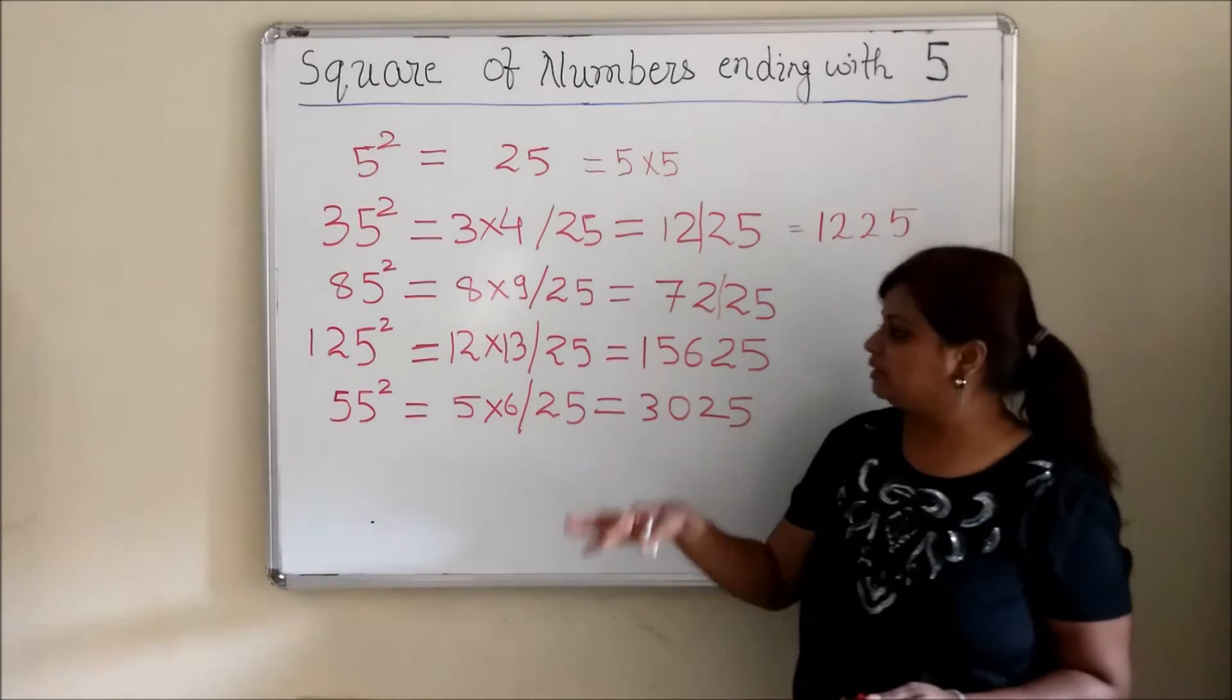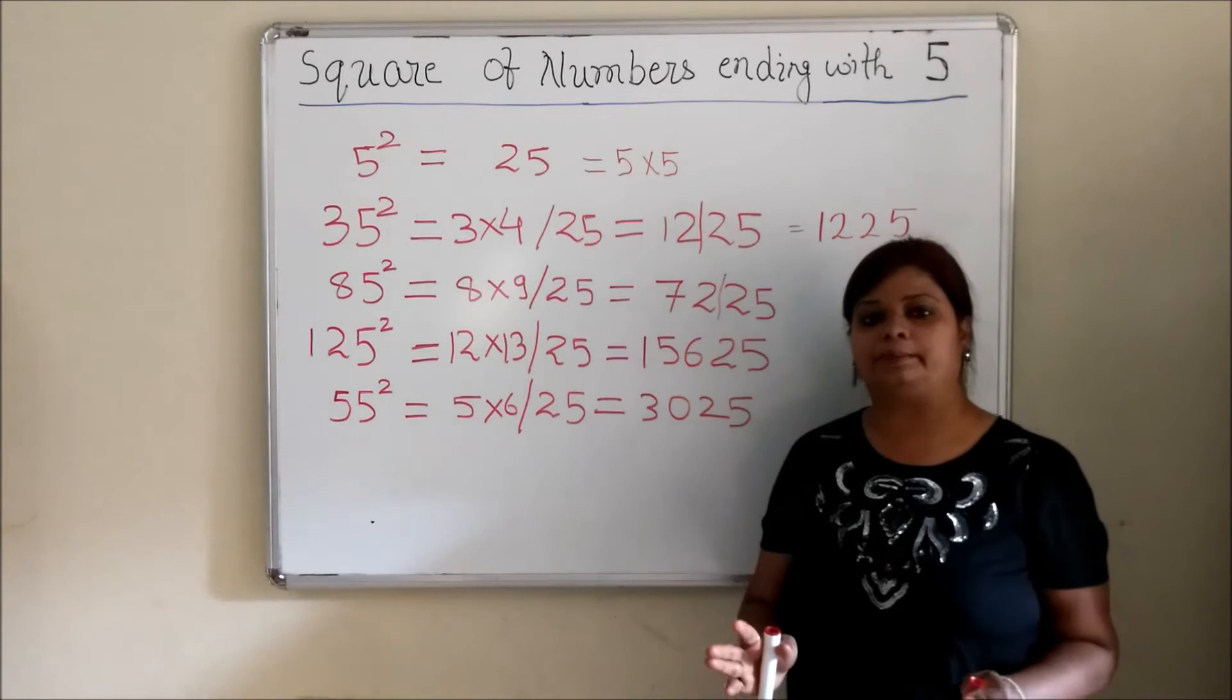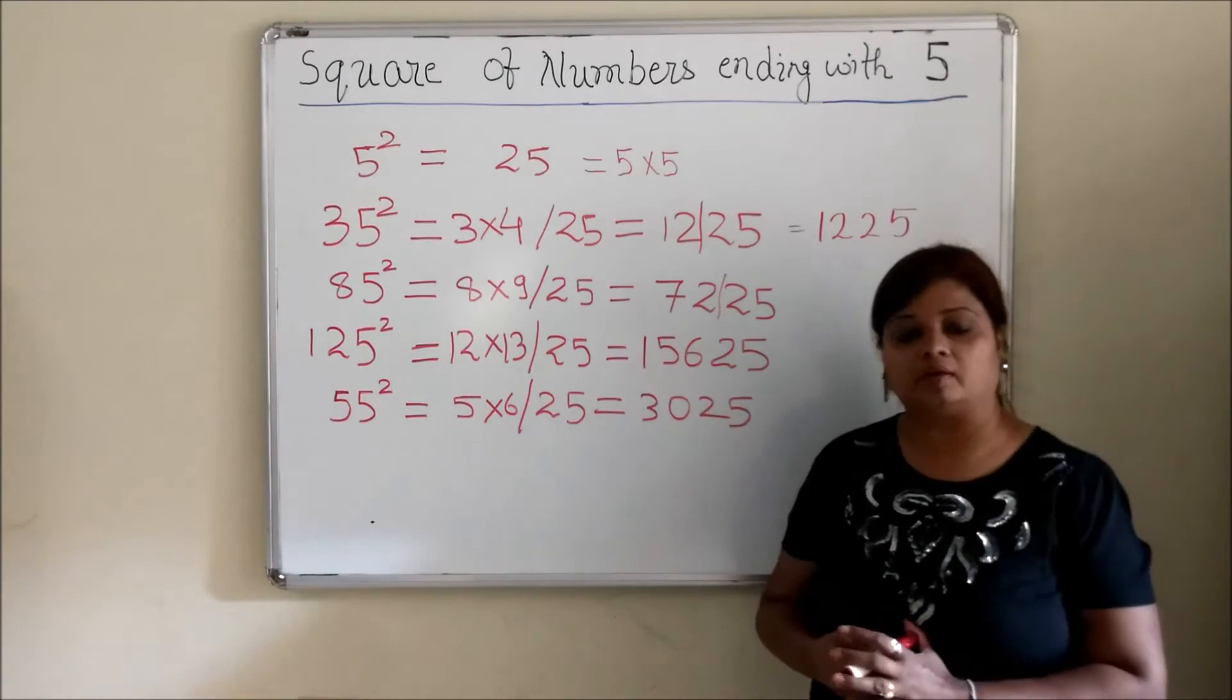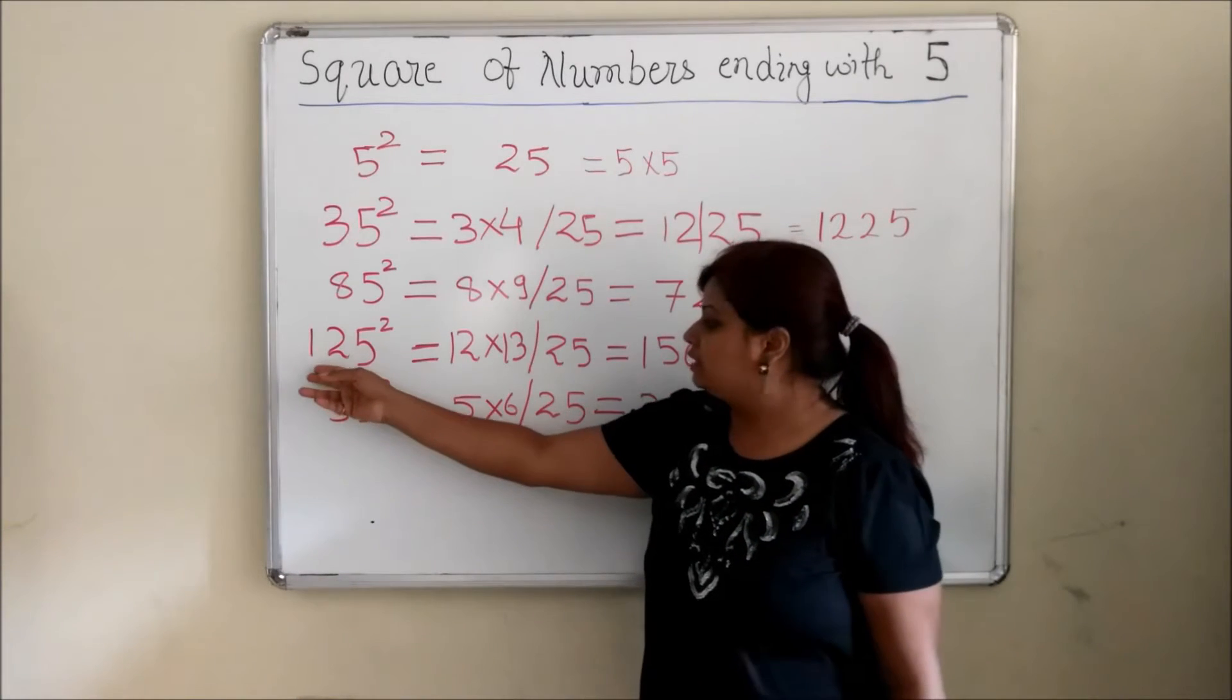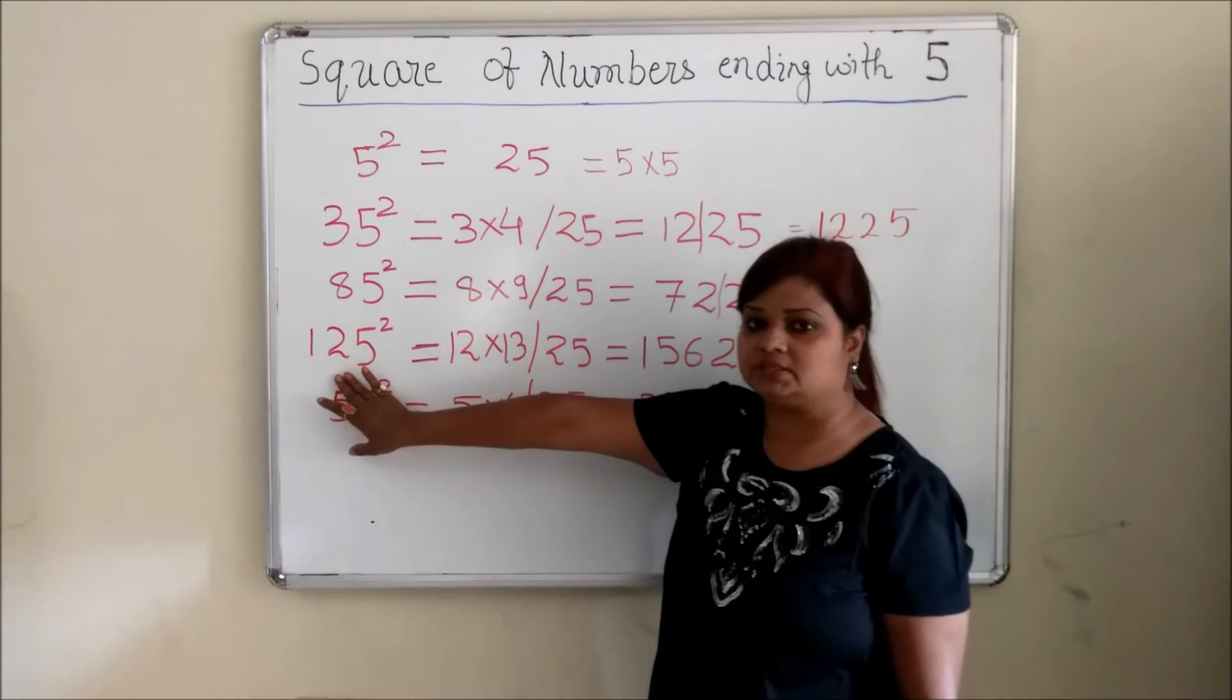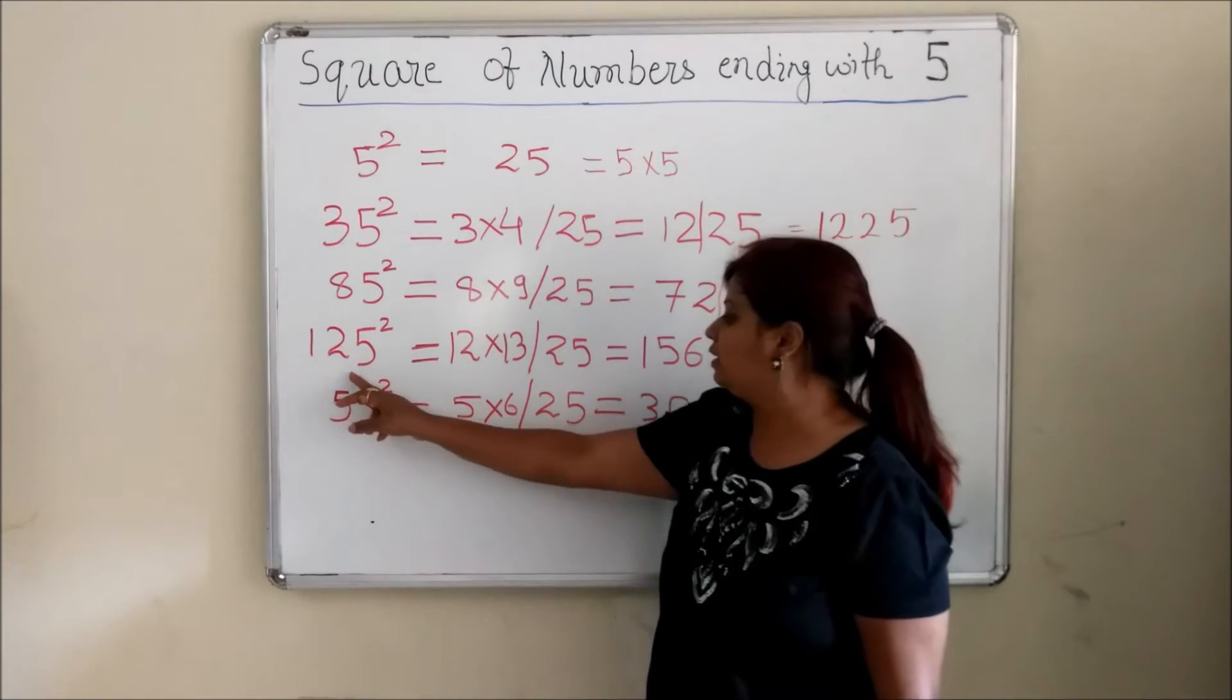So this method is true for any number ending with 5. Only thing which you have to take care of is whatever is the remaining number. So I have taken here as a specific 3 digit number. Now 125 square.